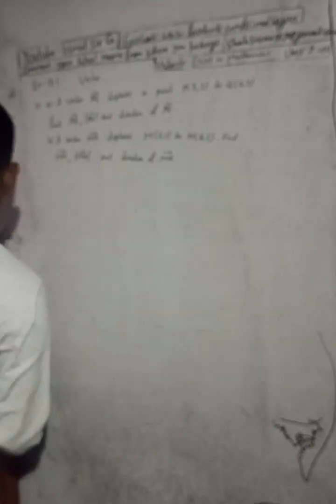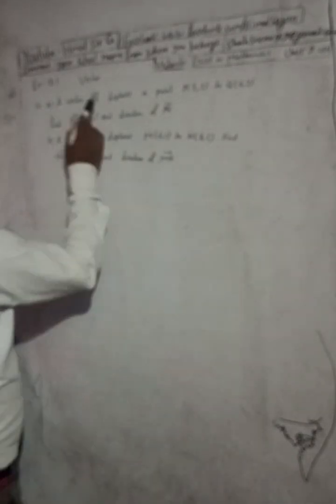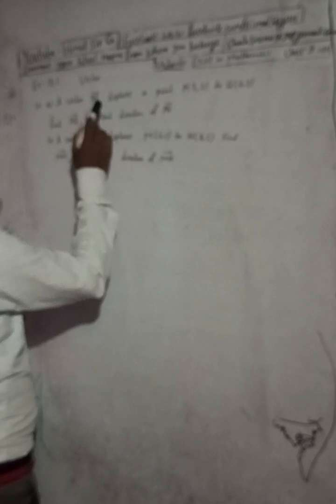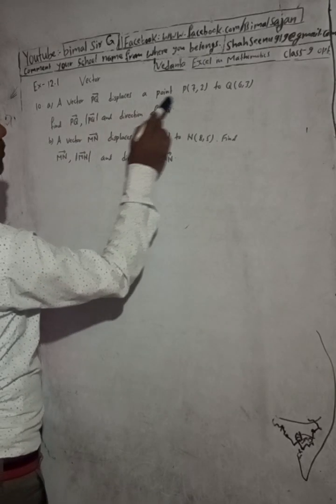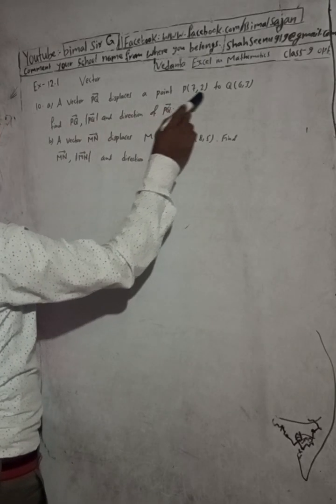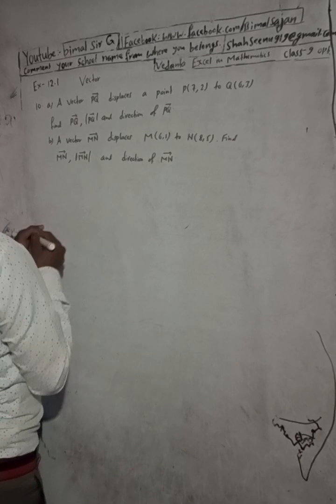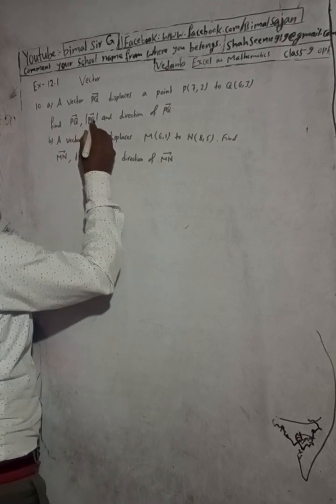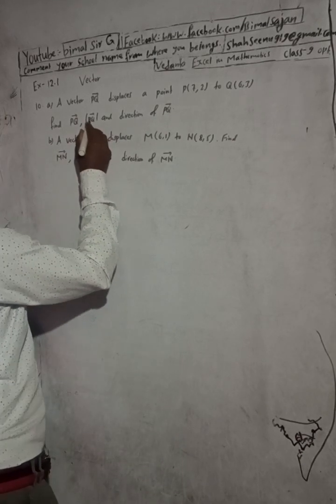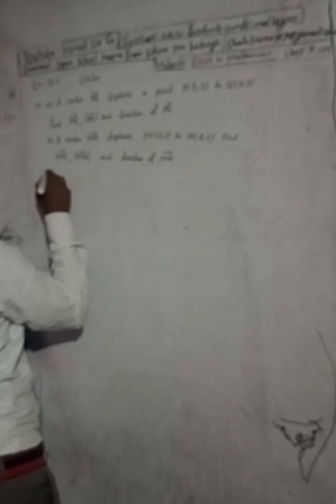The question is: a vector PQ displaces a point P(7, 2) to Q(6, 3). Find the PQ vector, its modulus or magnitude, and the direction of PQ. Solution.